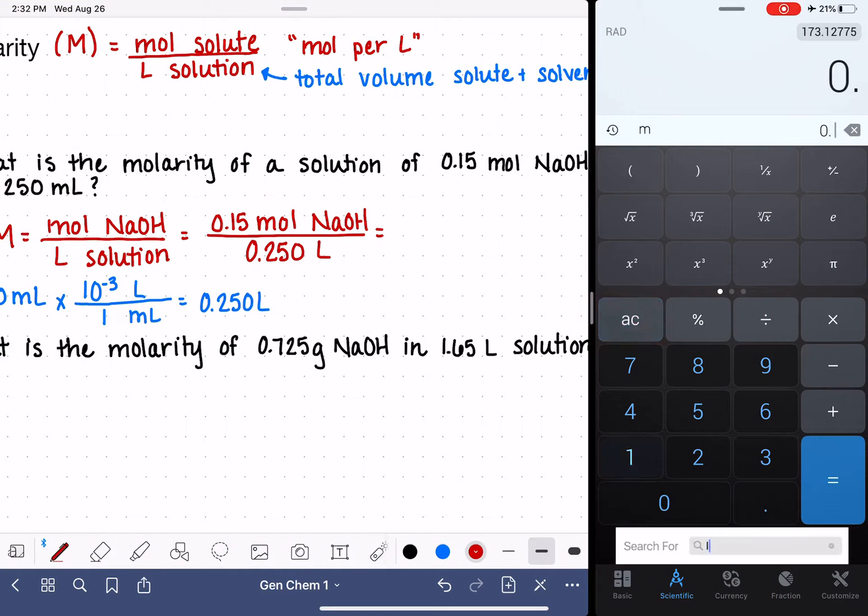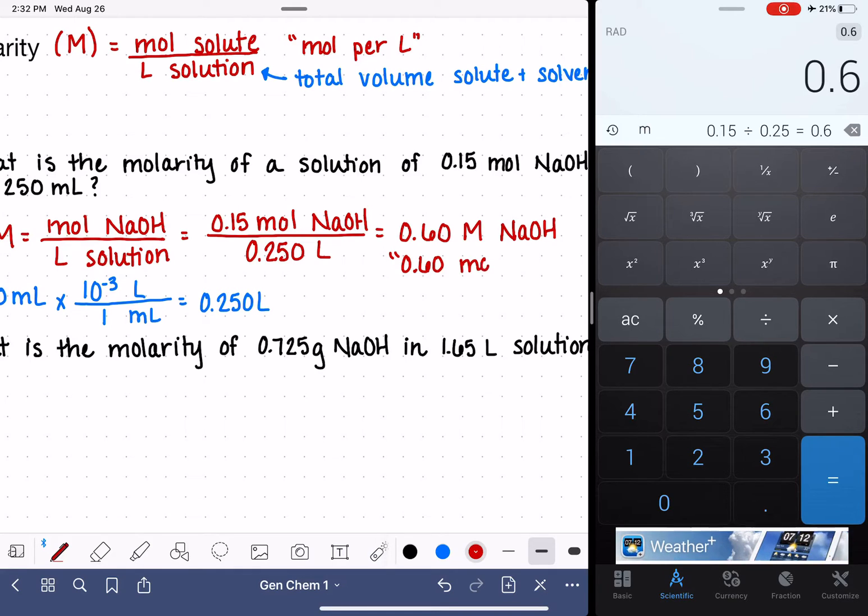0.15 moles divided by 0.25 liters gives us a molarity of 0.6. We should express this to two significant figures, so it is 0.60. When we are expressing our molarity, we write capital M to symbolize molarity, and then we write the formula of the solute after that. We pronounce this 0.60 molar NaOH.